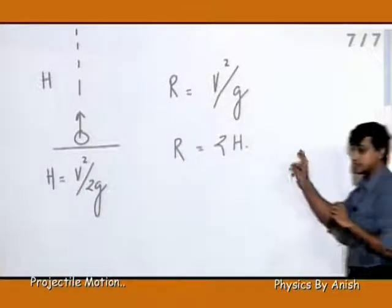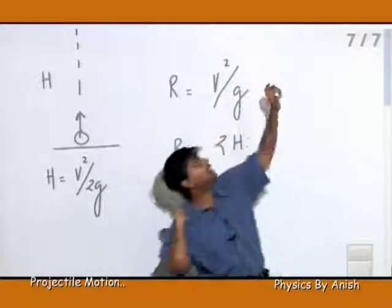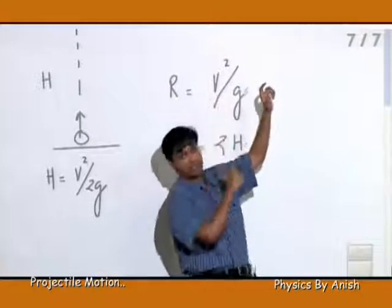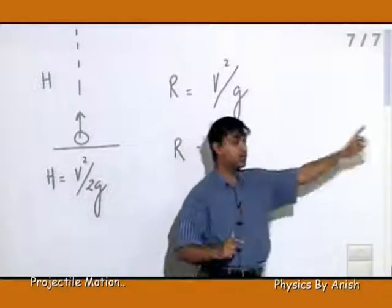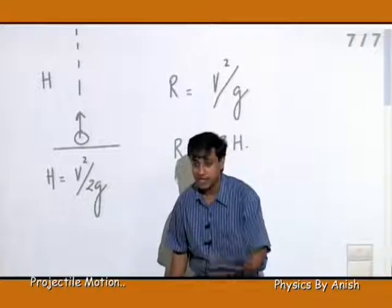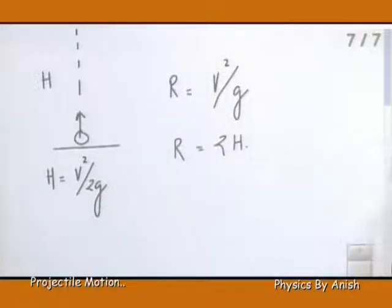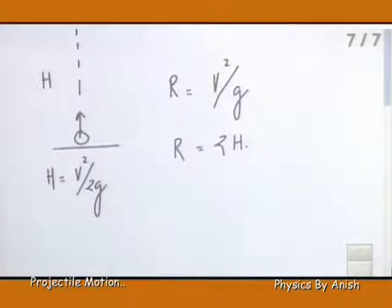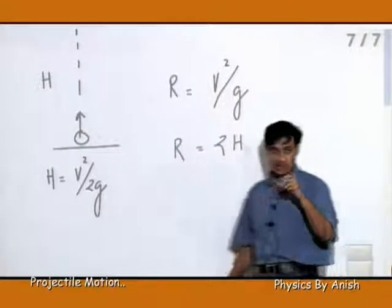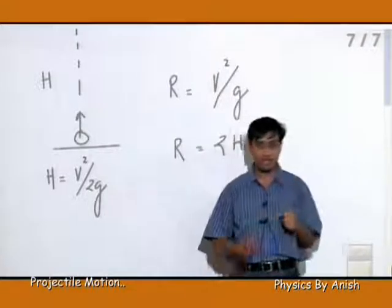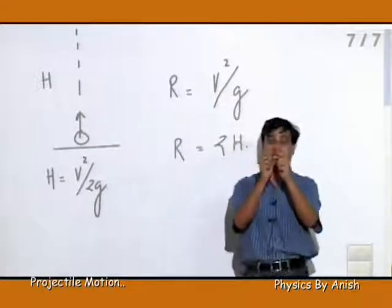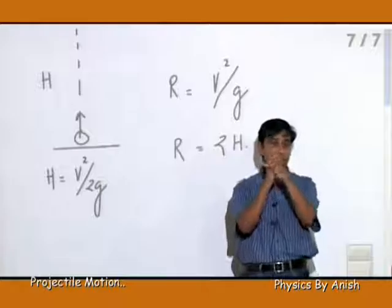So the answer is 2H. If you can throw a ball 10 meters vertically, then you can only throw it up to 20 meters horizontally. The answer is 2H.